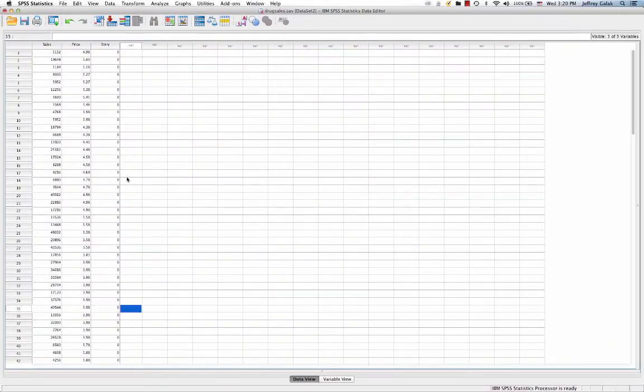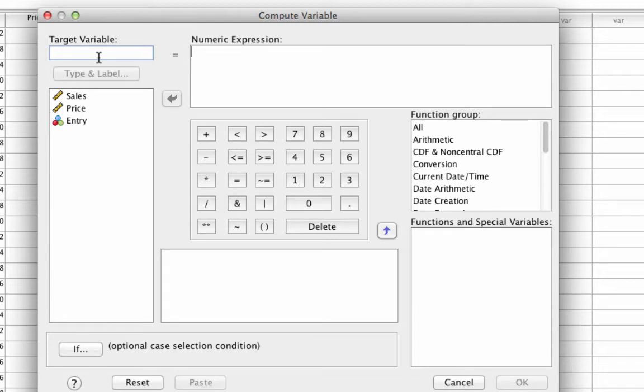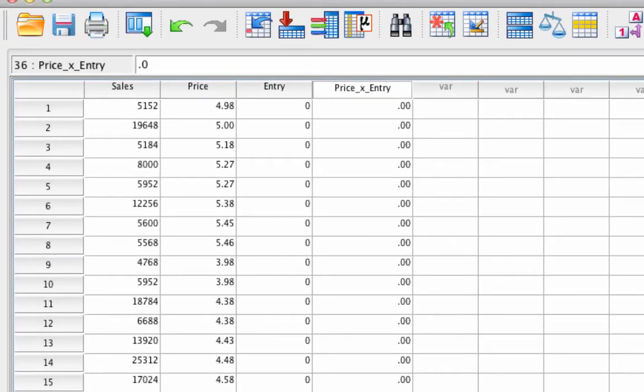The next thing we want to do is actually create the interaction term. And we do that by going to transform, compute variable. And we're going to name this variable something like price times entry. And the numeric expression is just going to be price star, which is just what we say for multiplication, times entry. And this gives us a new column over here.